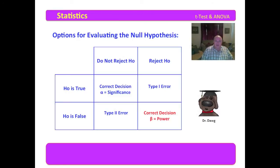If the null hypothesis is false and we reject it, that's a correct decision. That's where power comes in. Power is represented by beta, the probability that we will reject the null hypothesis when it's false. Alpha is the probability that we will fail to reject the null hypothesis when it is true.